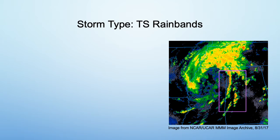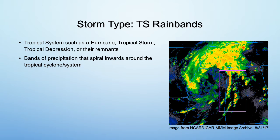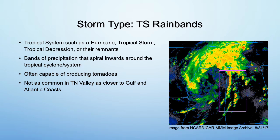The last parent storm type is TS rain bands. TS refers to tropical system, which means hurricanes, tropical storms, tropical depressions, or their remnants. The rain bands are bands of precipitation that spiral inwards around the eye of the tropical system. Those rain bands often produce waterspouts over the ocean and tornadoes when they get over land. These tornadoes are not as common in the Tennessee Valley as they are closer to the Gulf and Atlantic coasts because systems are significantly weaker when they get this far inland.